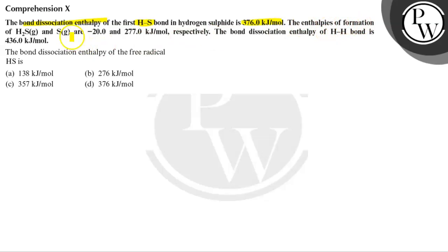The enthalpy of formation of hydrogen sulfide and sulfur is given. The bond dissociation enthalpy of the H-H bond is 436.0 kJ per mole. We need to find the bond dissociation enthalpy of the free radical HS.